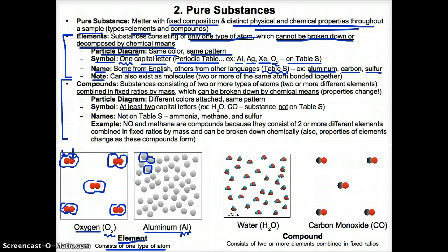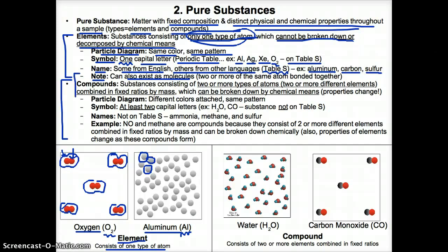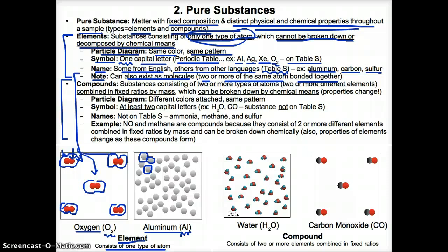One thing to know is that even though elements consist of only one type of atom, that can also be one type of molecule. Elements can exist as molecules, such as in the case of O2, an oxygen molecule, where the molecule has two or more of the same type of atoms bonded together. When it's an element, it's always the same type of molecule. If the elements are different, then you'll get something called a compound.